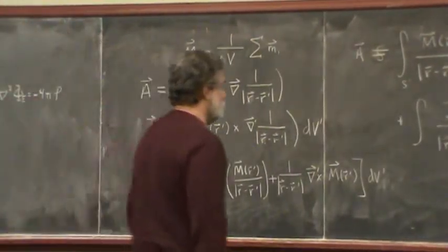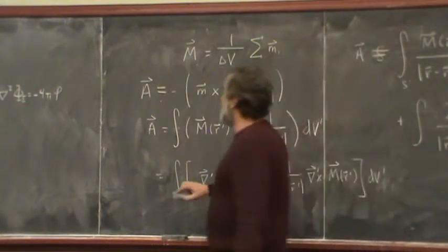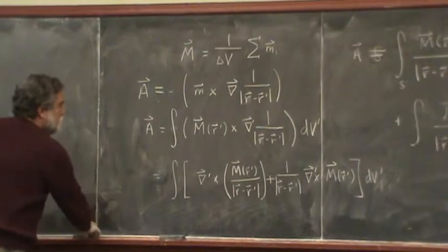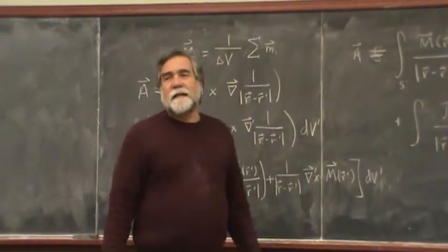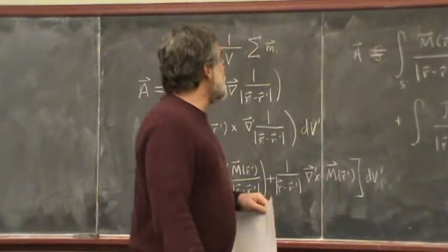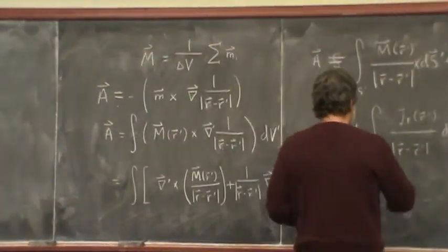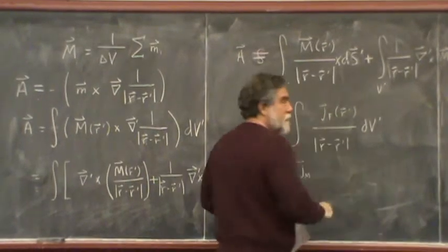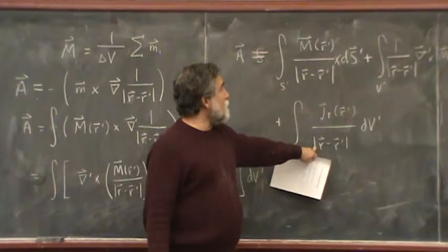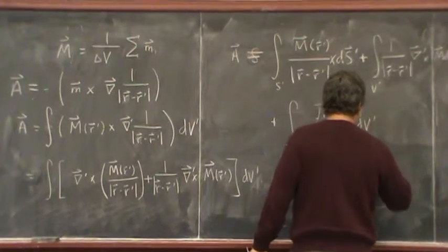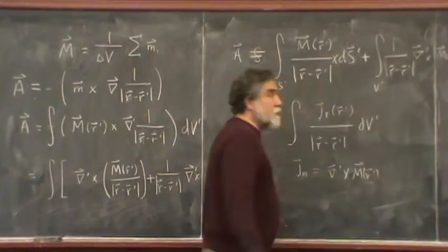Okay, here's what we're going to do now. I'm going to define a couple of quantities just to try to make things look more sensible. I'm going to define what we'll call the magnetization current. I'll define the magnetization current as the curl of the magnetization.